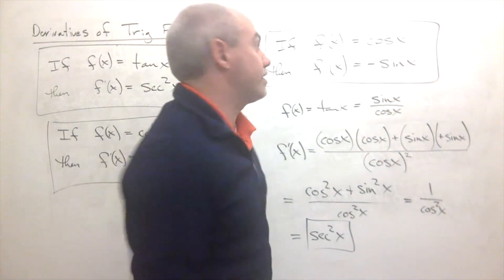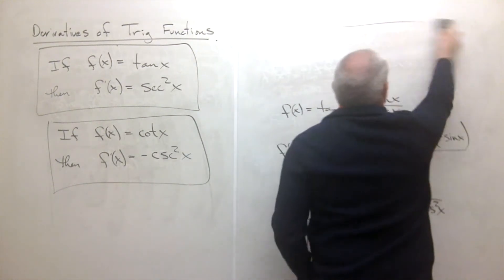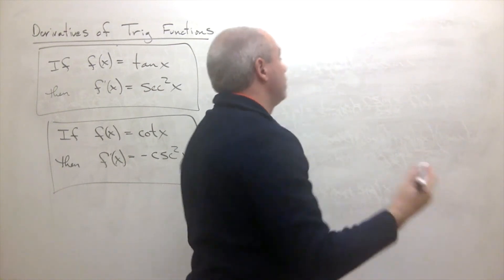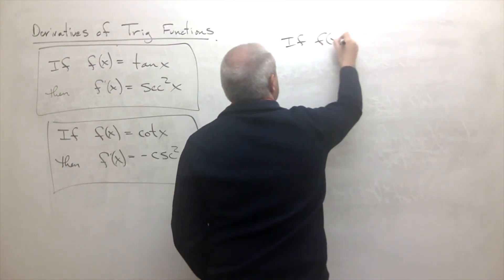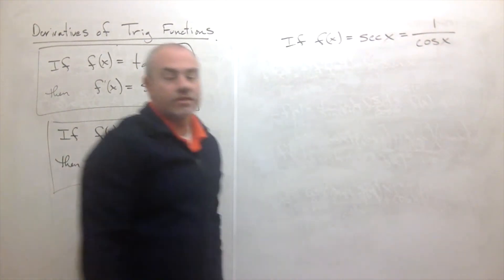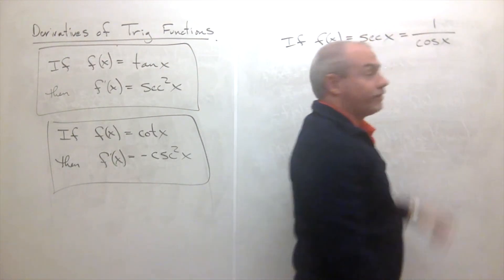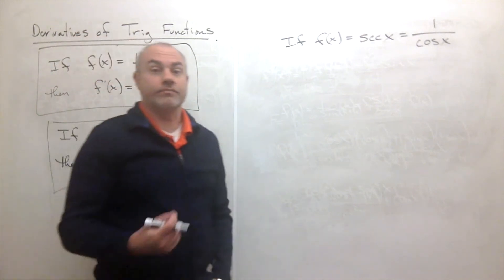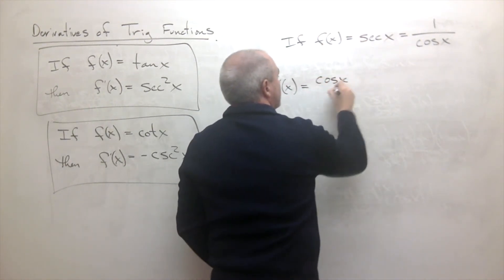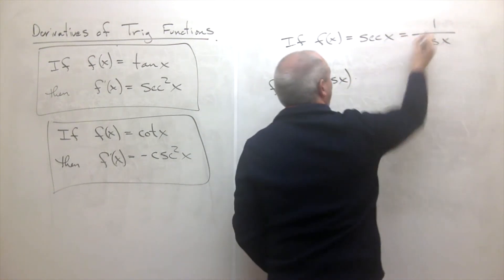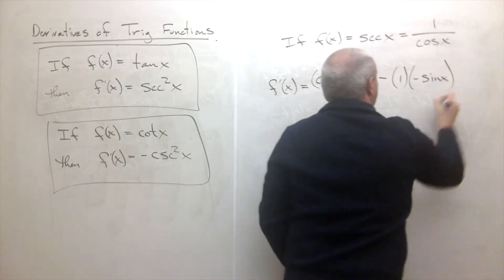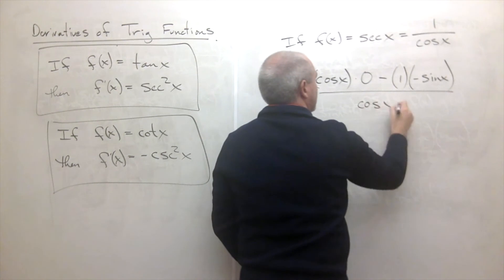That leaves two more: secant and cosecant. For secant, recall that secant of x is one over cosine of x, which is a quotient. Applying the quotient rule: f prime of x equals cosine of x times the derivative of one — which is zero — minus one times the derivative of cosine of x, which is negative sine of x, all over cosine squared of x.